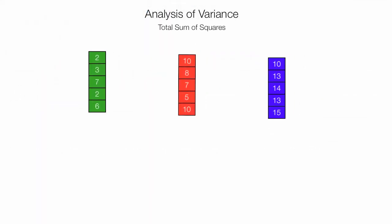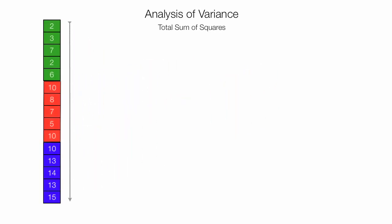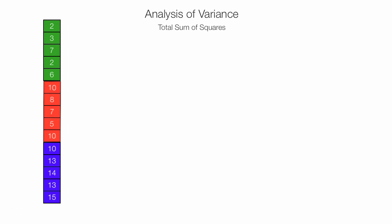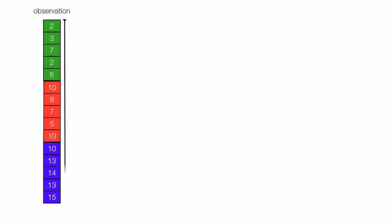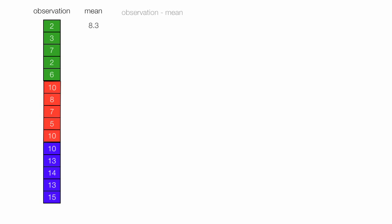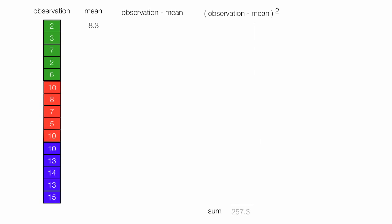Now I'm going to calculate Total Sum of Squares, and that's taking all three samples and treating it as one large sample. I'll take the variance from the mean on this one as well. The mean is going to equal 8.3 — I'll calculate it in Excel too, but I'm just telling you it's 8.3. I take each observation minus the mean, square that, and sum it all up. The sum is going to equal 257.3. This is Total Sum of Squares, or SST.